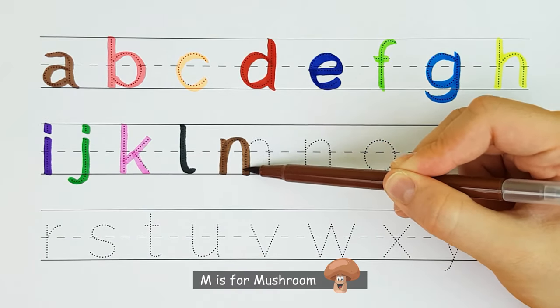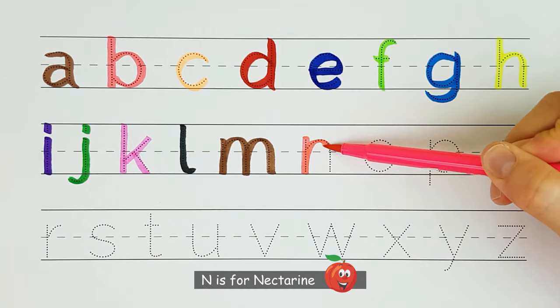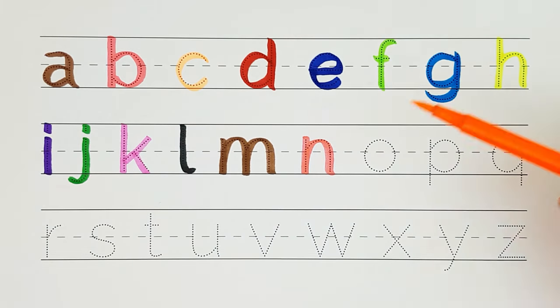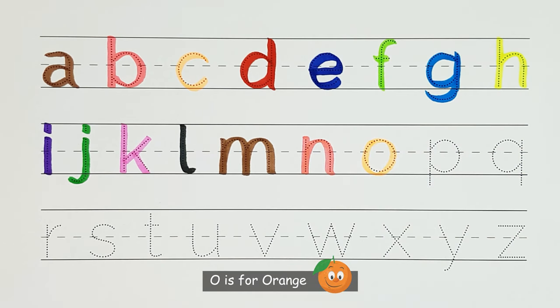M. M is for mushroom. M. N. N is for nectarine. N. O. O is for orange. O.